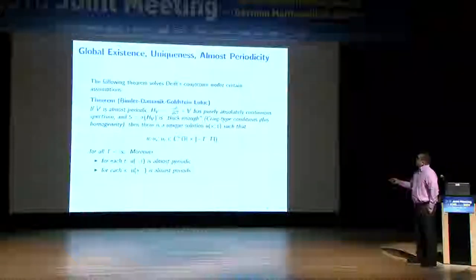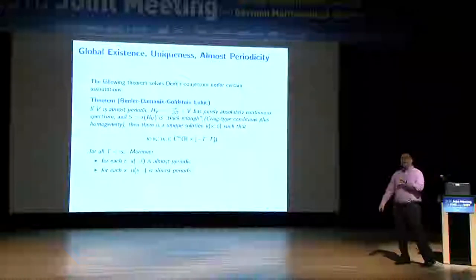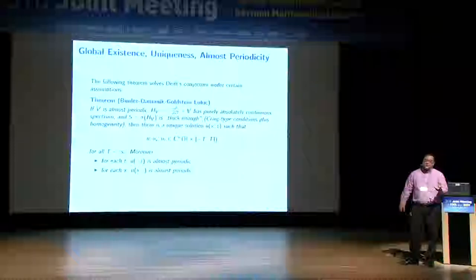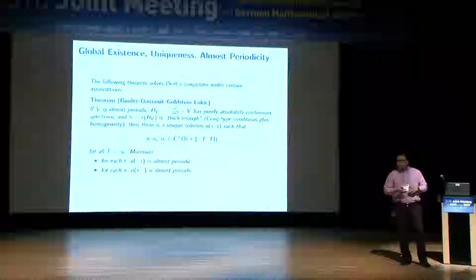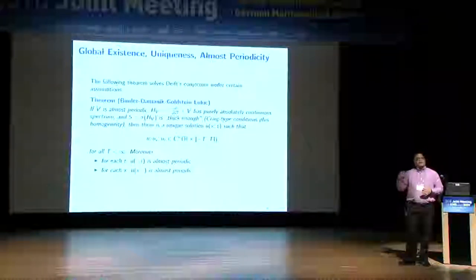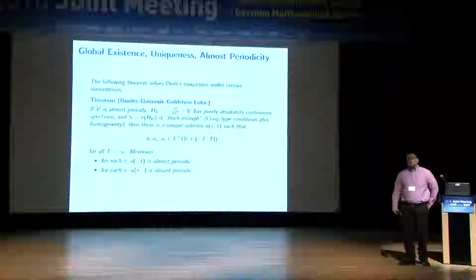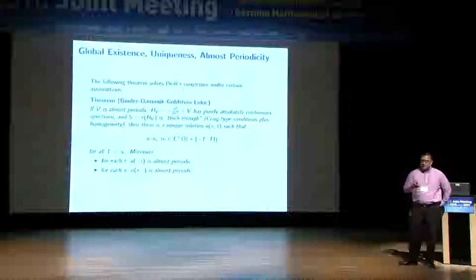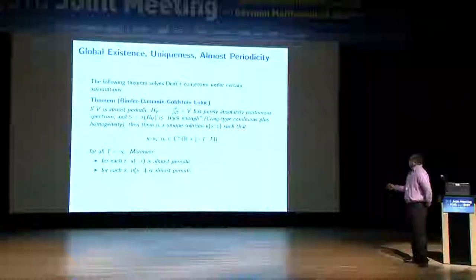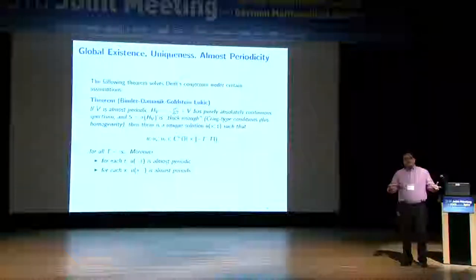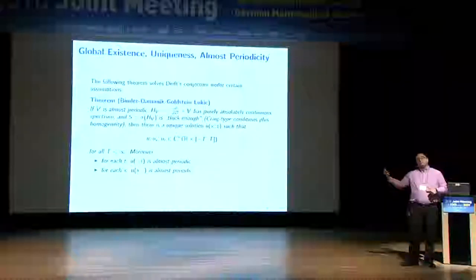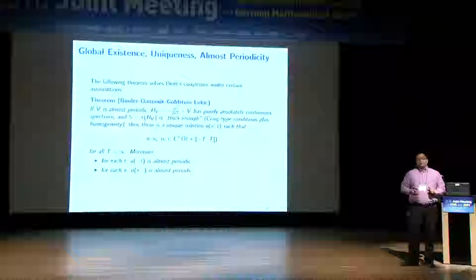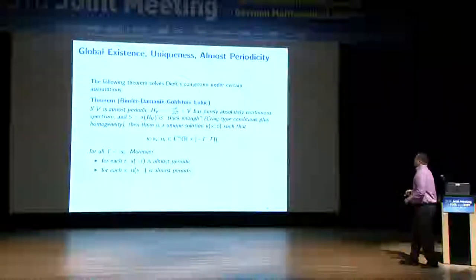The spectral measures should be absolutely continuous. They have the standard decomposition into absolutely continuous, singular continuous, and pure point pieces. We just need the absolutely continuous piece to either be the only piece or at least be fully supported. Once you can verify these assumptions about V, what you get is basically what you want: first, a global solution; second, you stay almost periodic in space for each time; and third, you're almost periodic in time for each X.